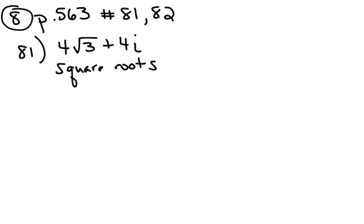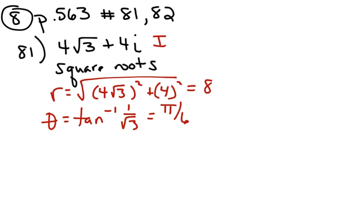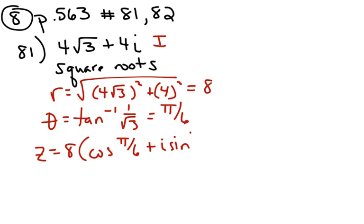We're going to start like all the rest of the problems. First, we need to find r. When we square 4√3 and 4, we get 48 plus 16, which is 64, and the square root of 64 is 8. Theta is going to be the inverse tangent of 1 over √3. Since this is in quadrant 1, the answer is 30 degrees or pi over 6. So the polar form is z equals 8 cosine(pi/6) plus i sine(pi/6).